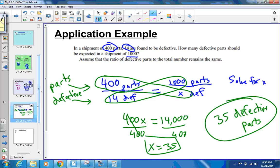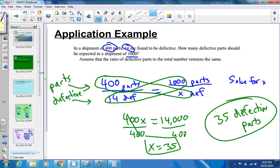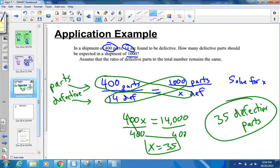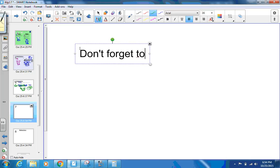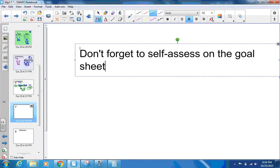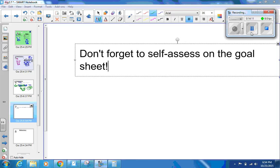So this is our work with proportions. I hope you took quality notes. You had at least one or two examples written down, the vocab written down. And now it's time to self-assess your learning. Don't forget to self-assess on the goal sheet. That's all we have for today. We'll talk to you next time.